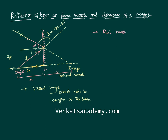A real image is one which can be caught on the screen — we can catch it on the screen and see it there. But this kind of virtual image cannot be caught on the screen. So images are of two types: real and virtual. Virtual means our eye extends the light rays and identifies them somewhere behind the mirror — that kind of image is called a virtual image.